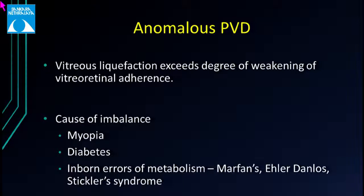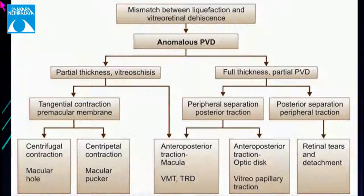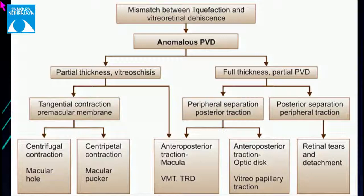Anomalous PVD occurs when vitreous liquefaction exceeds the degree of weakening of vitreo-retinal adherences, leaving areas of firm adhesion that do not separate. Conditions like myopia, diabetes, and inborn errors of metabolism predispose to anomalous PVD. The various sequelae include vitreous schisis or incomplete PVD. Vitreous schisis leads to tangential contraction: centrifugal force leads to a macular hole; centripetal force leads to a macular pucker. Anteroposterior traction from vitreous schisis can lead to VMT and tractional retinal detachment. Incomplete PVD can lead to VMT, tractional retinal detachment, vitreopapillary traction, or peripheral retinal tears and detachment.